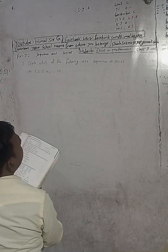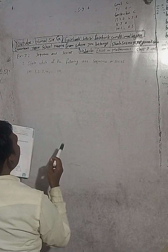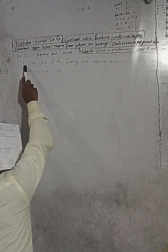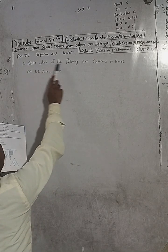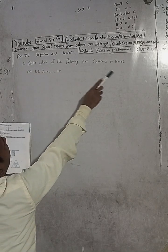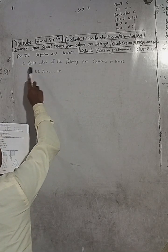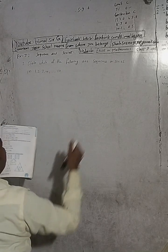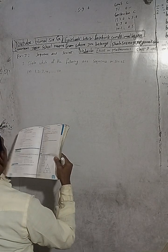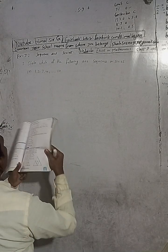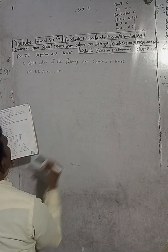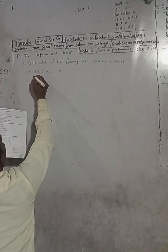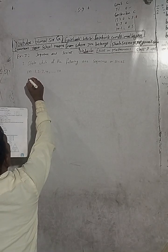Now the question is here: number (a) — state which of the following are sequences or series. The question asks you to identify each item as either a sequence or a series.